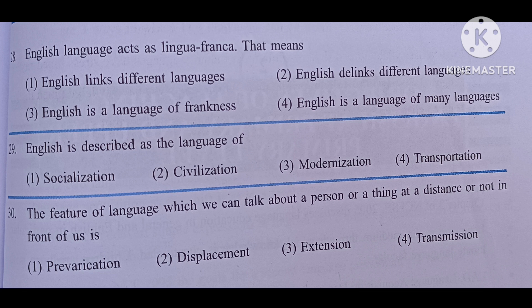The feature of language by which we can talk about a person or a thing at a distance or not in front of us is: number one, prevarication; number two, displacement; number three, extension; number four, transmission. The answer is displacement.